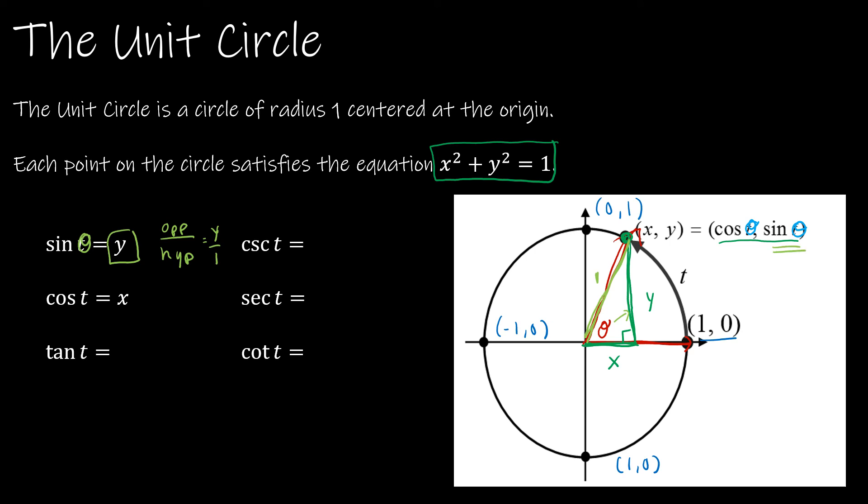Same thing for cosine. Cosine is adjacent over hypotenuse, and so the adjacent side is the side that's not opposite, which is x over 1, which again is just x. And then tangent was always opposite over adjacent, and therefore that is y over x.